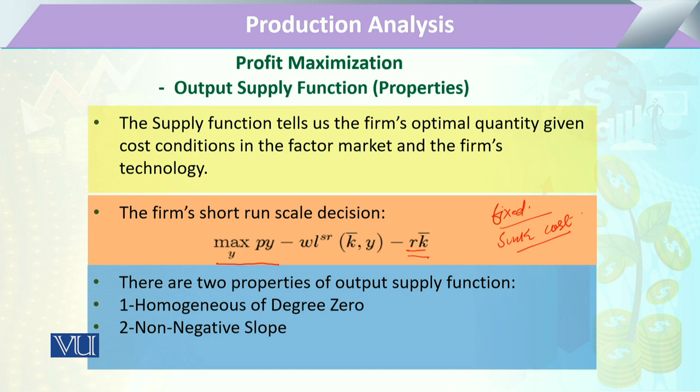This cost is there, and K-bar shows the variable cost. Keeping these two conditions in view, we can say a firm is going to maximize its profit, and this maximization of profit is the maximization of revenue minus cost.